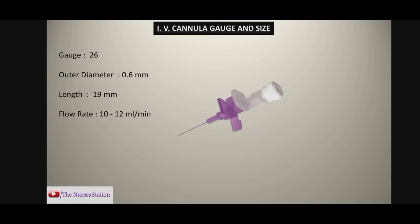Lastly, we have the violet colored cannula with a gauge size of 26, outer diameter of 0.6 mm, and length of 19 mm. The flow rate in this type is 10 to 12 milliliters per minute. The violet and yellow colored cannulas are usually used in the pediatric and neonatal population because they are very small, with a very low flow rate and very small diameter compared to other cannula types.